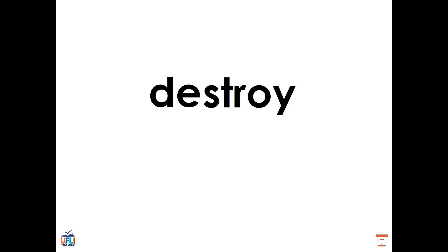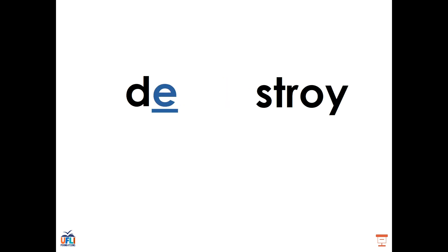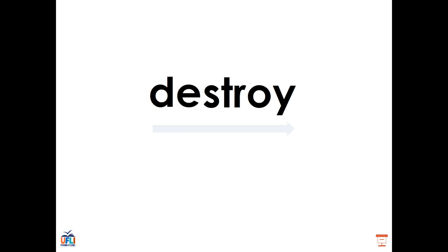Let's take a look at this word. This is the word DESTROY. If we break it up into its syllables, we can see that we have DE and STROY. The first syllable is an open syllable — it ends in a vowel, but we don't see any vowel teams or diphthongs. We do, however, see one in the second syllable, STROY. We hear the OI sound, which in this case is being made by the letters OY since it's coming at the end of the word. DE-STROY, DESTROY.